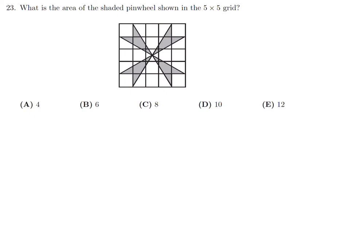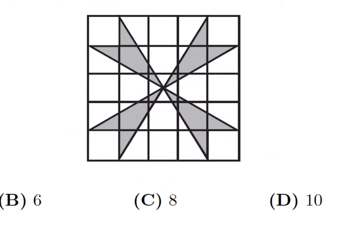What is the area of the shaded pinwheel shown in the five-by-five grid? I'll draw one line from the center to a point on the edge, and that cuts the shaded region exactly in half. This green-line region represents one eighth of all the shaded area, because there are eight such triangles total. If I find the area of one triangle and multiply by eight, I get the total shaded area.